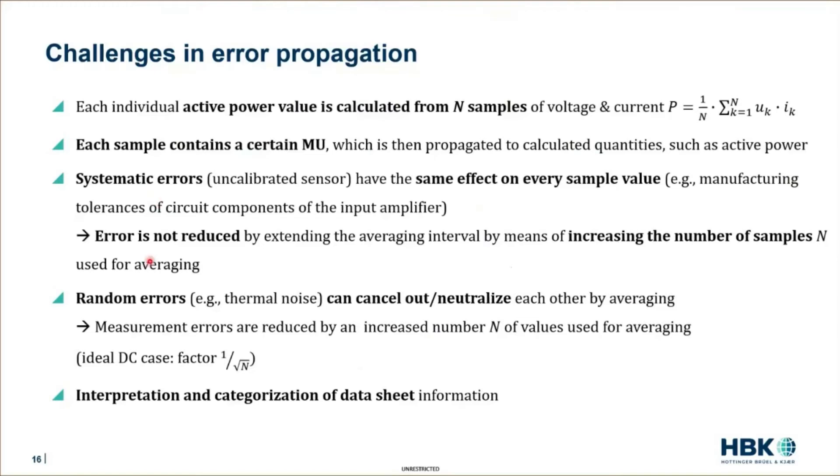On the other side, we have random errors such as noise, for example. And if you think about noise, this is not the same from sample to sample. For one instant in time, it can be a bit too big. For the next instant in time, it is a bit too small. And therefore, it may cancel out each other from sample to sample. And for this, these errors may be reduced by increasing the averaging interval. That's also the reason why a lot of people who need high accuracy, they do not average the active power over only one fundamental cycle. They take a multiple integer of it.